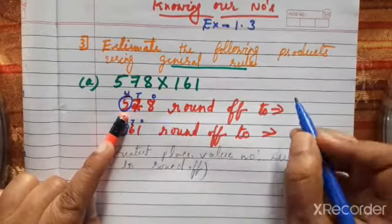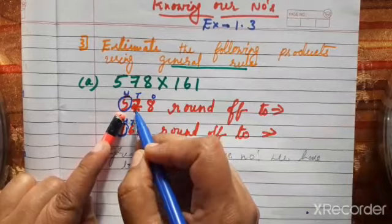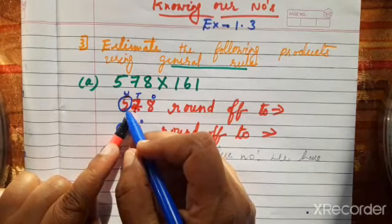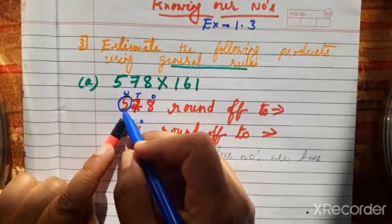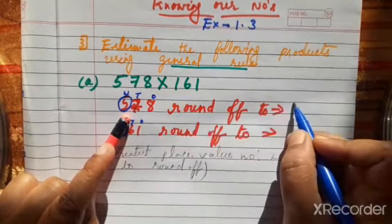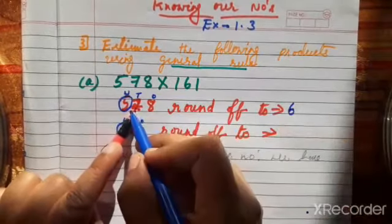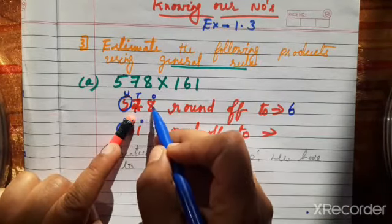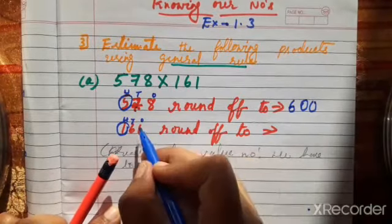Using the poem method: circle the digit 5 and knock the door — ask the next digit: do you have 5 rupees or more? The next digit is 7, which is greater than 5, so it can help. Add 1 to 5, making it 6. The remaining digits after the door knock become zeros. So 578 rounds off to 600.